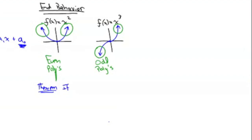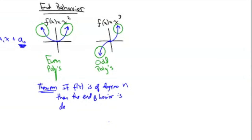If f of x is of degree N, then the end behavior is determined by the first term of the polynomial. You can have a huge, ugly polynomial, and all you concentrate on is that first term.